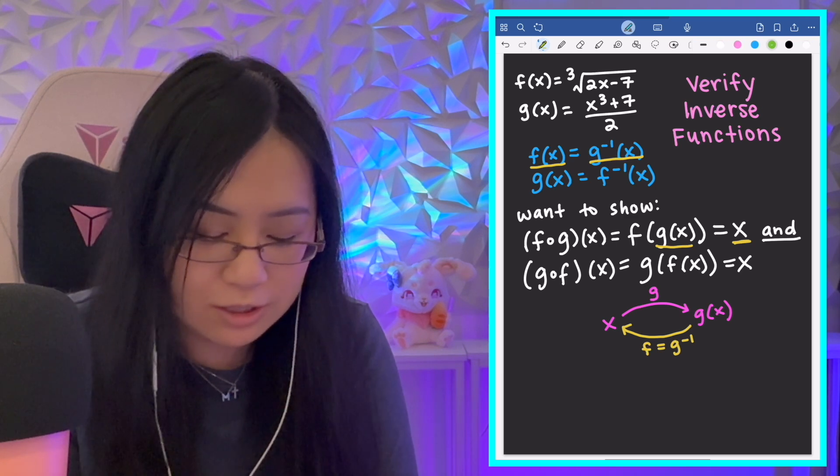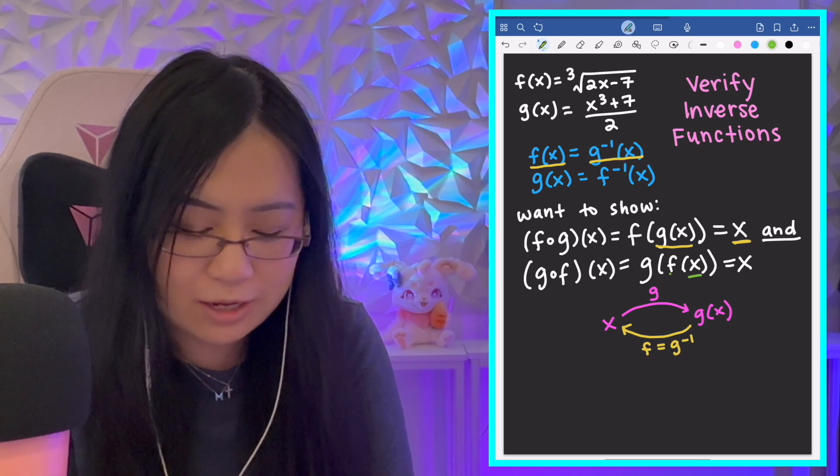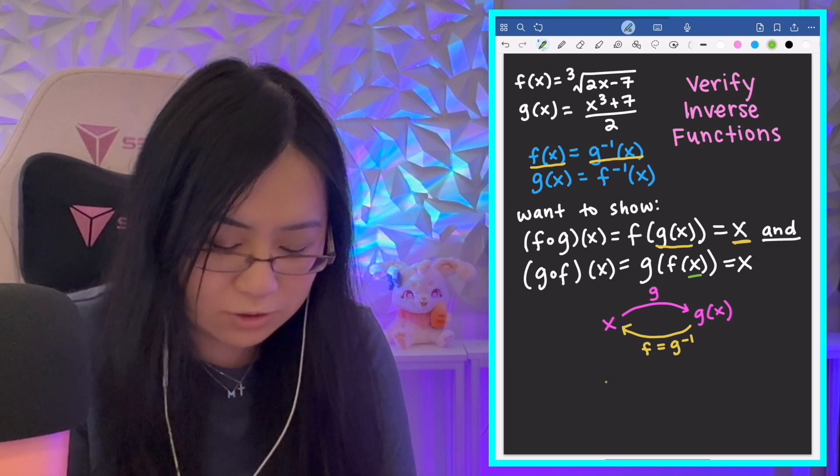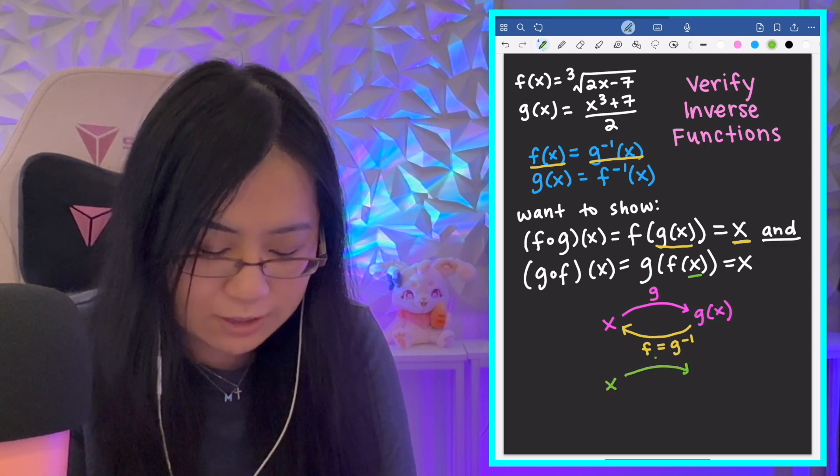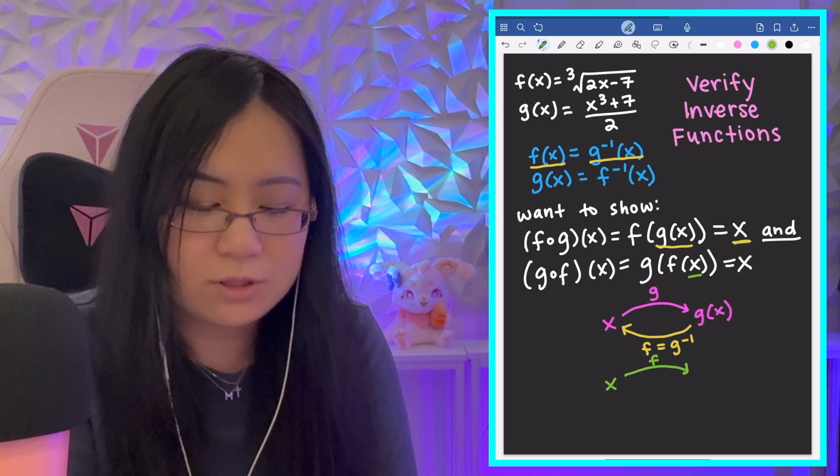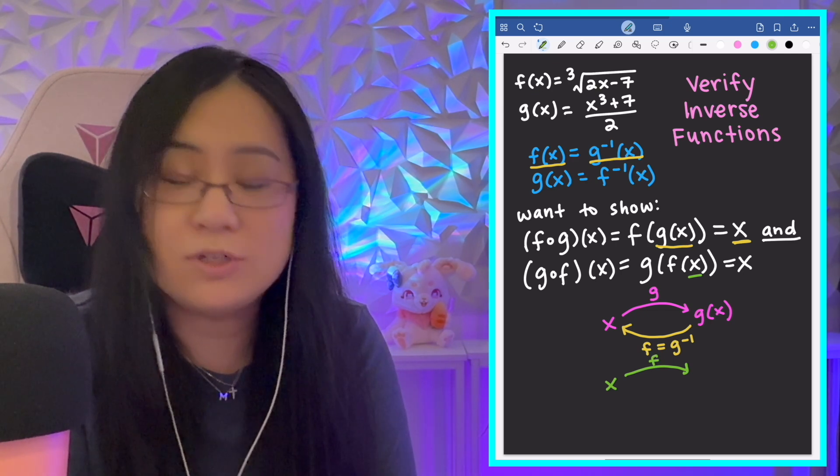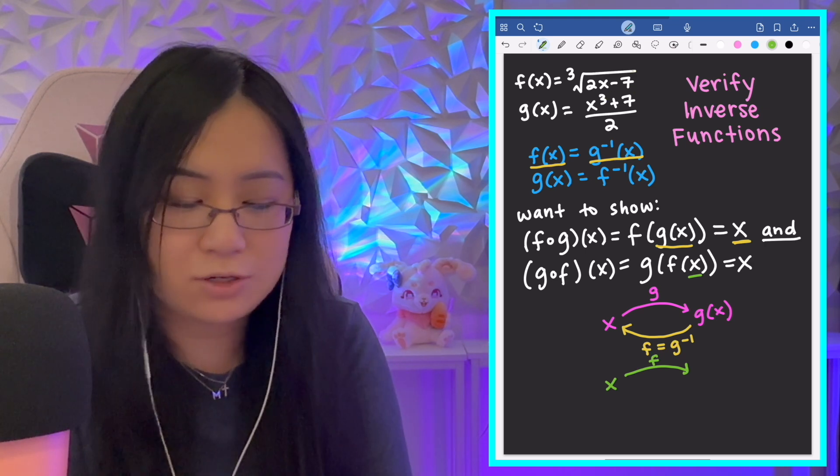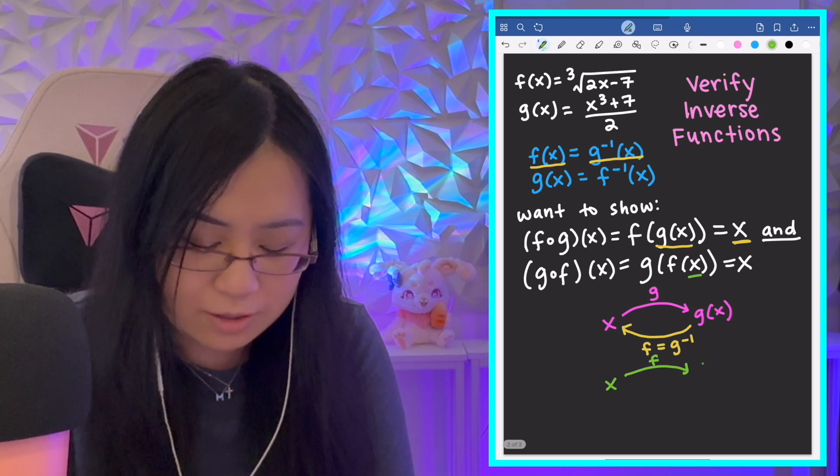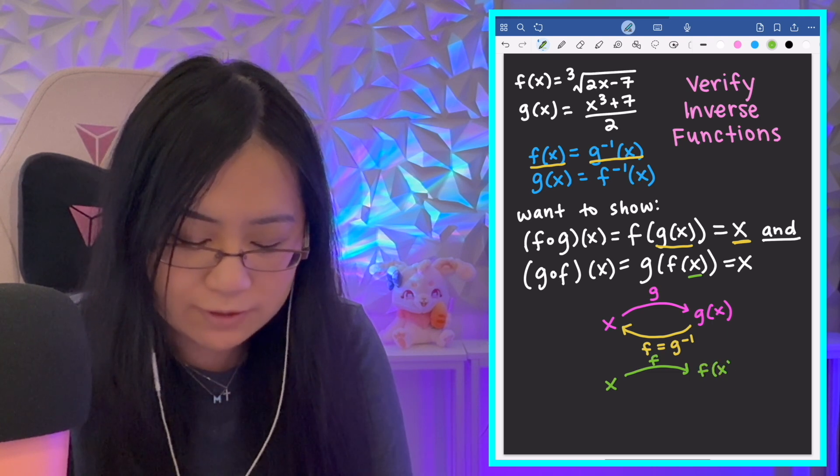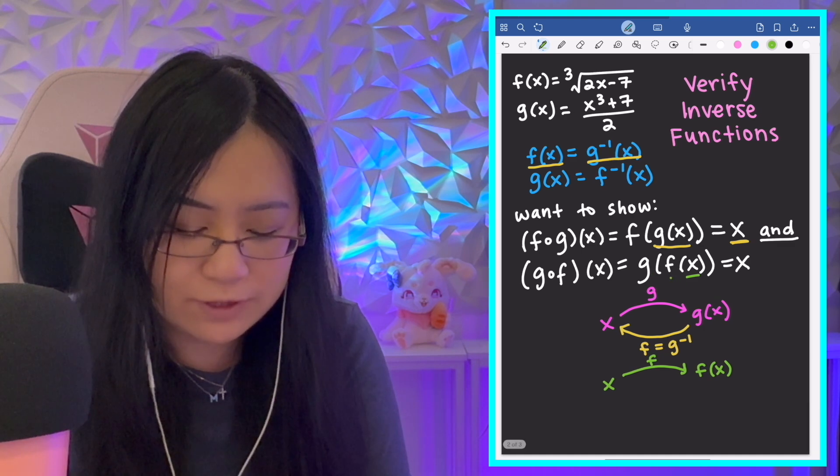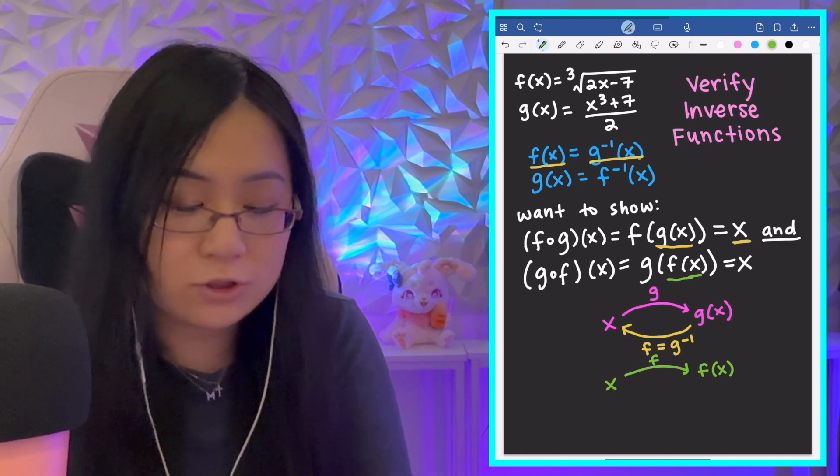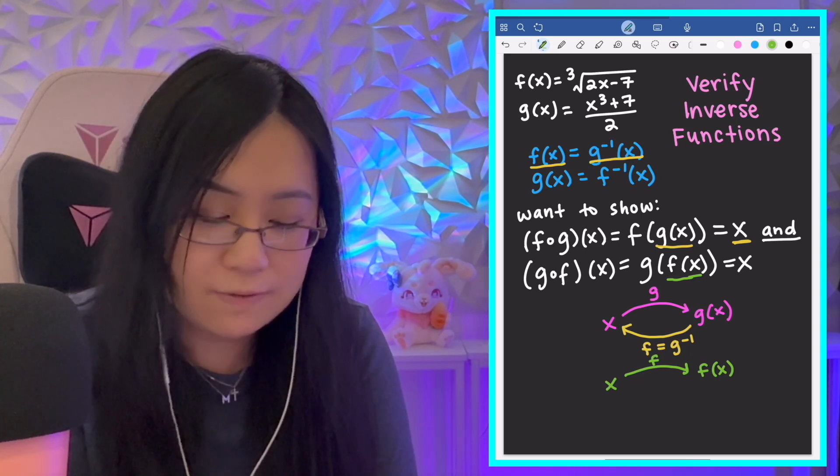If I plug in x and I apply f(x) to it, if I apply f to x, then I do the cube root of 2 times that x value minus 7 and do the order of operations there. But if I input x, I'll get an output of f(x).